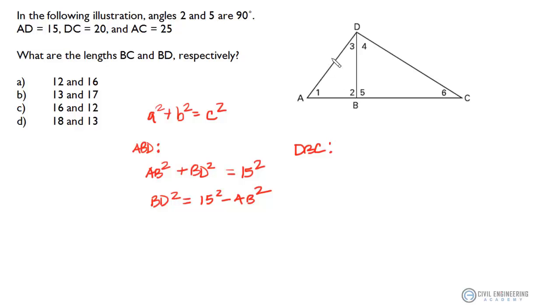Okay, so let's do the same thing for triangle DBC. Now, let's write these lengths on here so we can remember which ones are defined. So we got AD was 15, DC over here on this side was 20, and AC from here to here was 25, that entire length across here.